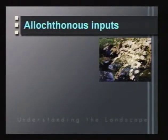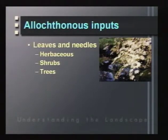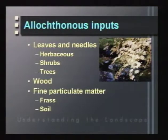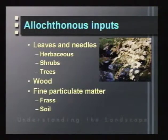In stream ecosystems, there are two major sources of energy. Allochthonous inputs come from outside the stream ecosystem and include leaves and needles from herbaceous plants, shrubs, and trees alongside the stream, wood material from surrounding trees, and fine particulate material such as eroding soil and insect frass falling in from the canopy.